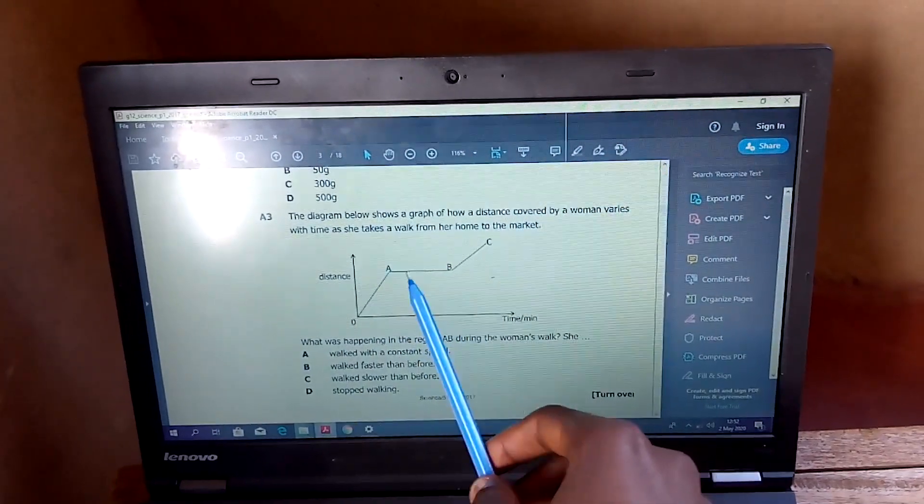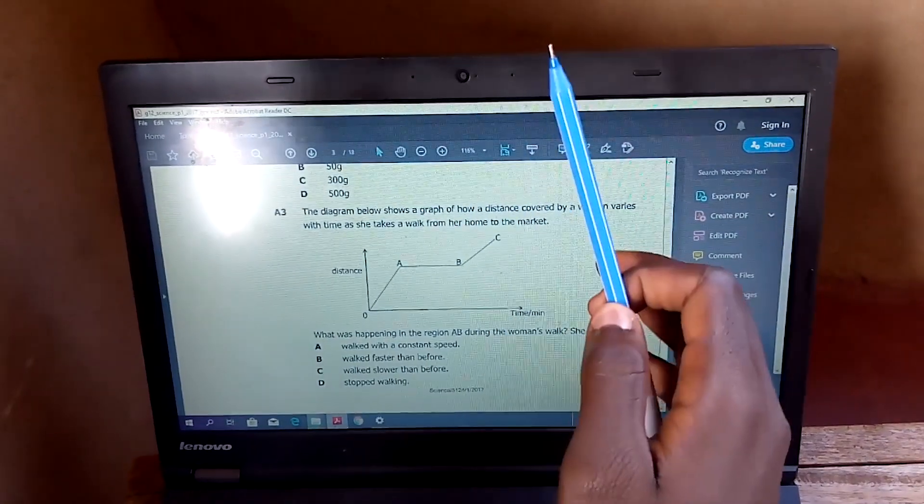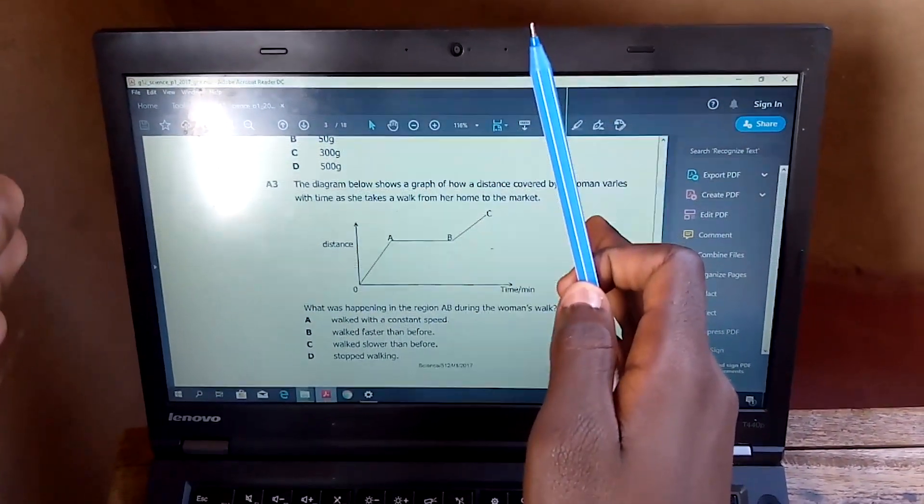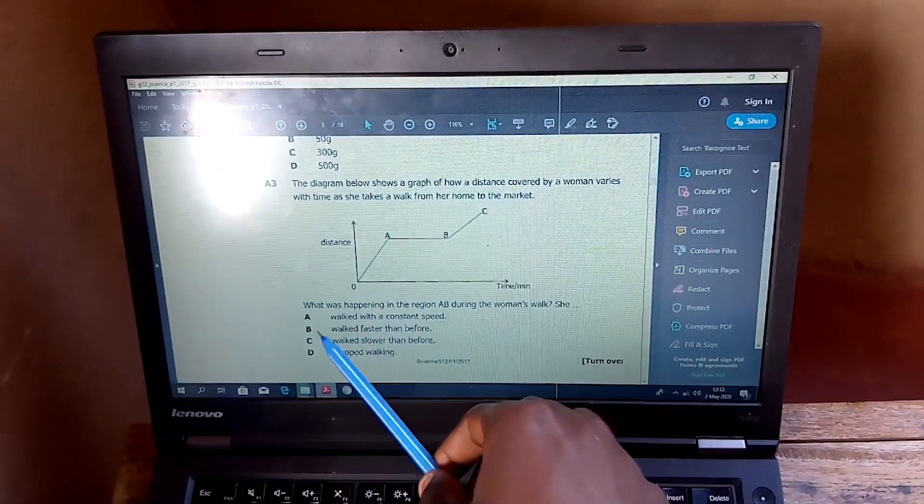But from A to B, this region, the distance wasn't changing, meaning that person was at a constant place, just at one point. No movement was happening. So in this case, the answer should be D, the woman stopped walking.